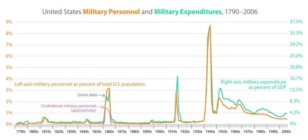Governors have control of each state's Army and Air National Guard units for limited purposes. The President has the ability to federalize National Guard units, bringing them under the sole control of the Department of Defense.